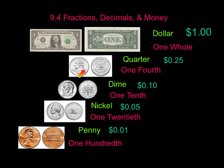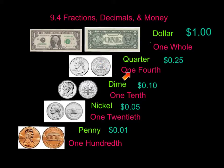Our next one: we have quarters. Quarters are a quarter of a dollar, and that's why it's called a quarter. A quarter is equal to one-fourth, which would be a fraction in words, and 0.25 — so, 25 cents.